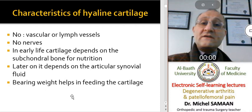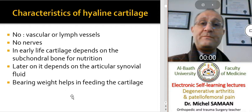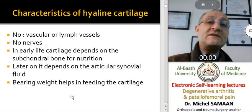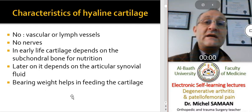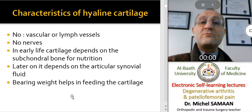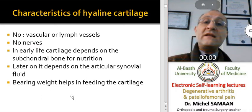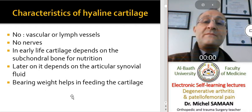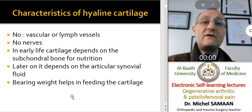Hyaline cartilage has many special characteristics. It has no blood supply, no lymph vessels, and it is not innervated. So the healing process does not follow the normal healing process of other tissues. In early life, hyaline cartilage depends on the subchondral bone for nutrition, but later on it depends on the synovial fluid.